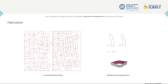For fabrication, the global geometry was discretized into individual elements and unrolled. Each unrolled module was given an ID, string placement marks, a midpoint line for joining to the next module, as well as the height between midpoints required in its post-tension state.